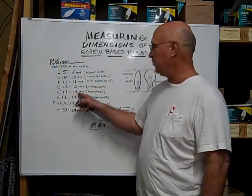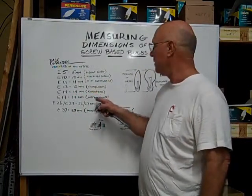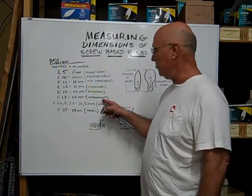The E14 is 14 millimeters. That's the European standard. The E17 is 17 millimeters. It's an intermediate.